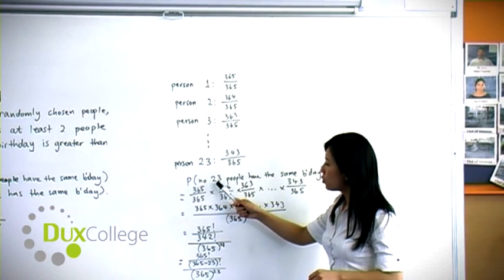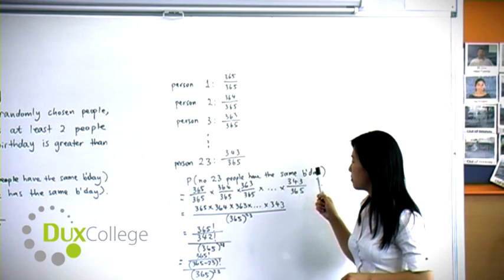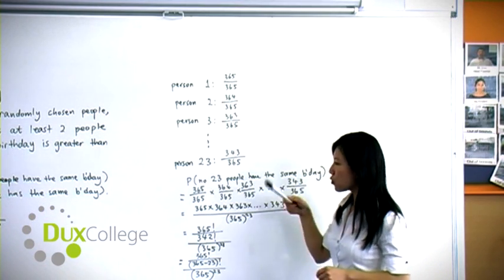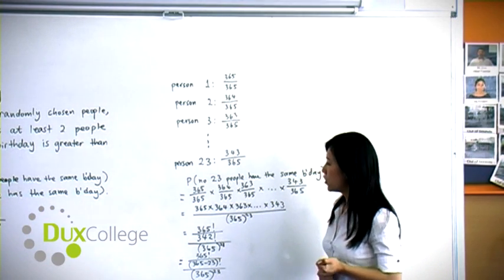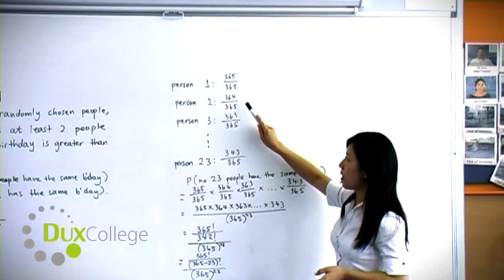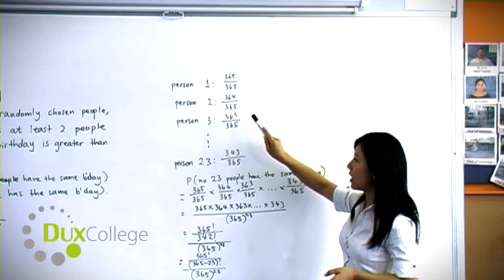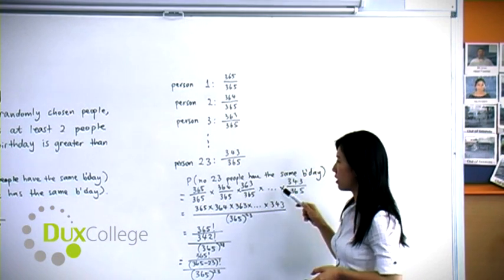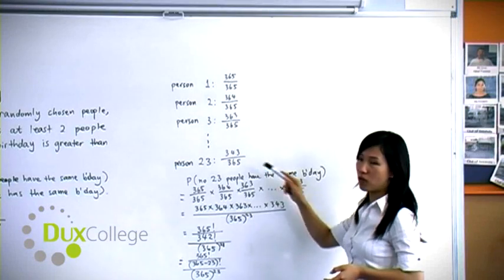Now, no 23 people have the same birthday. So what is the probability of that? Which is the probability of person 1's birthday multiplied by the probability of person 2's birthday, et cetera, to person 23, which is the product of what we have on the top.